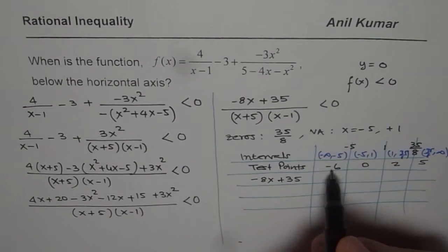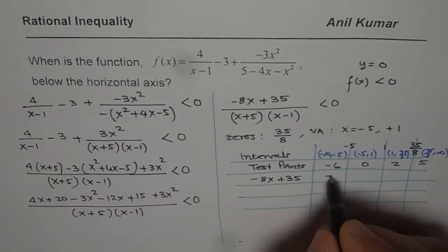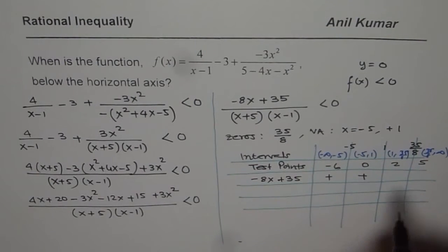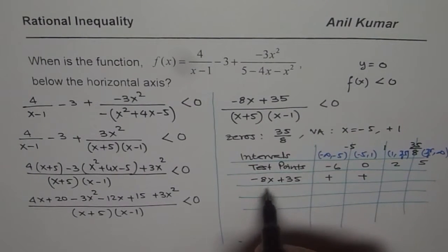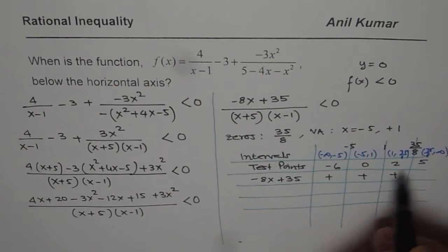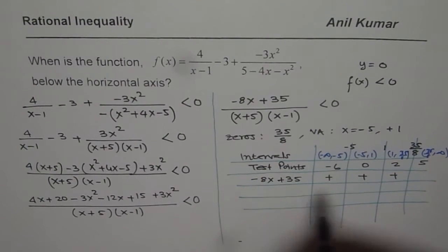So if I substitute minus 6 here, it becomes positive. If I substitute 0 here, it is positive. If I substitute 2 here, then it is minus 16 and it is still positive. If I substitute 5 here, then that becomes negative. Because minus 8 times 5 is 40. So we get a negative number.